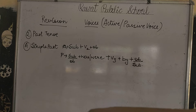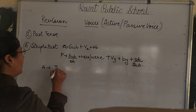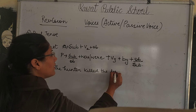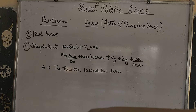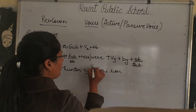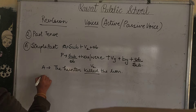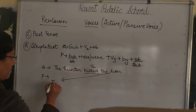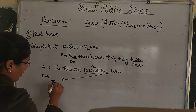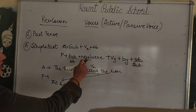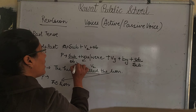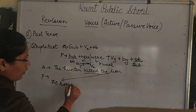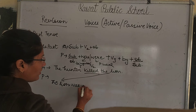For example: 'The hunter killed the lion.' This is the active form. Now to change it to passive, the object 'the lion' will become the subject. The lion is singular, so we use 'was'. Then we use the verb third form: 'killed'.